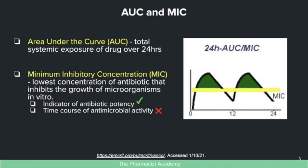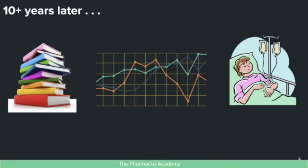The AUC-MIC ratio tells you the systemic exposure of the drug while also taking into consideration the MIC, so you can see over the past 24 hours what the exposure was and what the exposure above the MIC was — giving you a real idea of how efficacious the medication was over that 24-hour period.